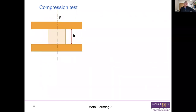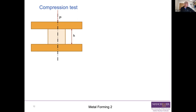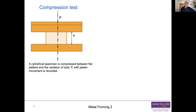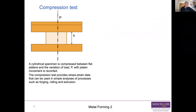Most forming operations we worry about — like extrusion, forging, or rolling — are actually putting compressive loading in, because you can put much more strain in under compression before failure: there's no instability, no neck formation. In the compression test, you take a cylinder of material of height H, place it between two platens, and squash it. You measure the relationship between applied load and the amount of compression — compressing between flat platens and observing the variation of load with platen movement. This provides stress-strain data applicable to processes like forging, rolling, and extrusion.